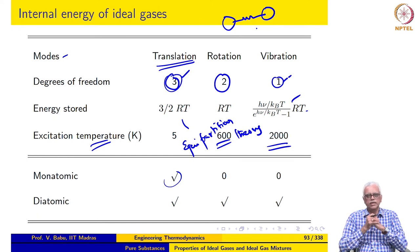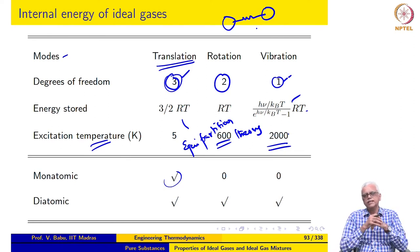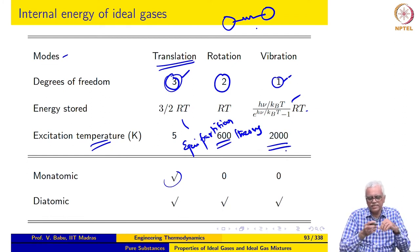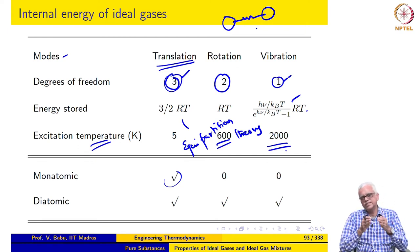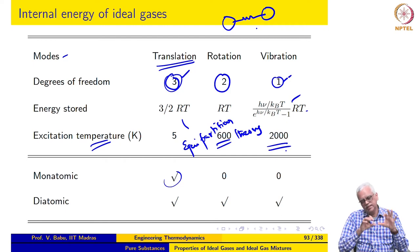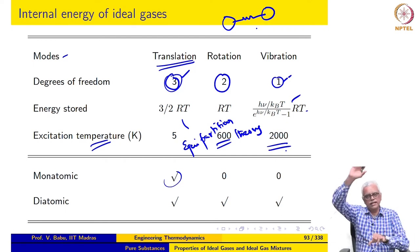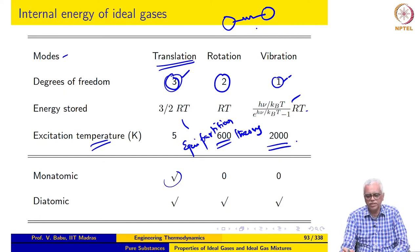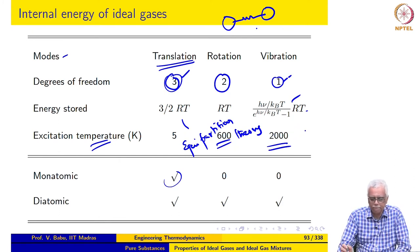As temperature reaches about 2000 Kelvin, vibration is fully excited — the maximum energy that can be stored in vibration is reached. If temperature increases beyond this, dissociation starts taking place and the bond is broken. The characteristic vibration temperature of about 2000 K is typical for most diatomic gases. So the excitation temperature is the temperature at which gases switch from storing energy in one mode to storing energy in an additional mode.